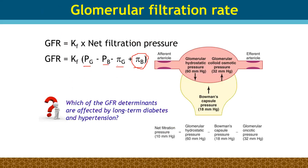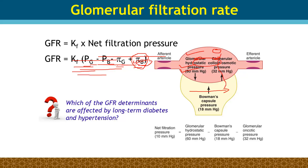Glomerular filtration rate (GFR) is the volume of fluid filtered across the glomerular membrane per unit time. Per minute, GFR is 125 ml per minute. Per hour, multiply by 60. Per day, it equals 180 liters. Always consider the time factor when expressing GFR. GFR equals KF multiplied by net filtration pressure.